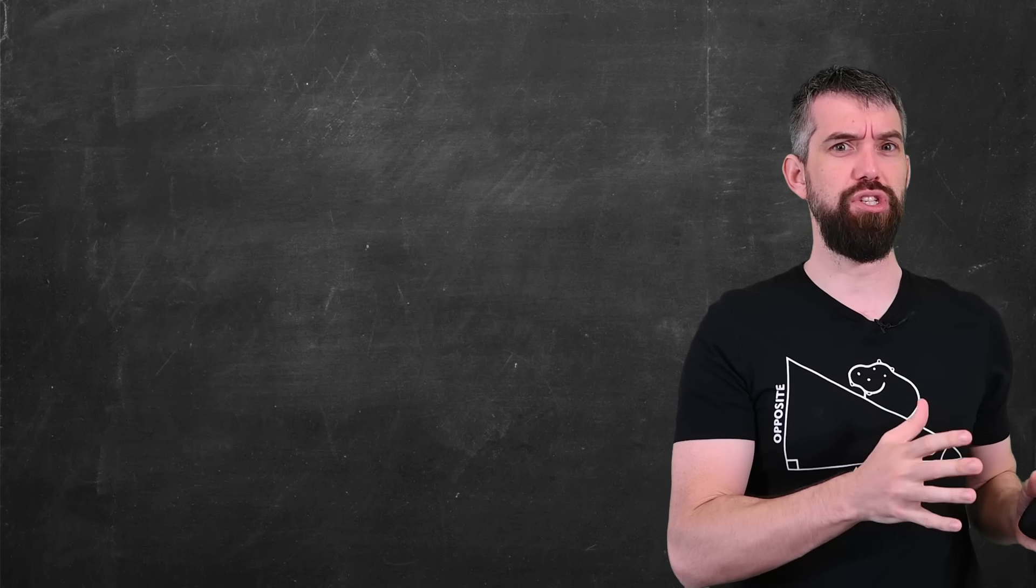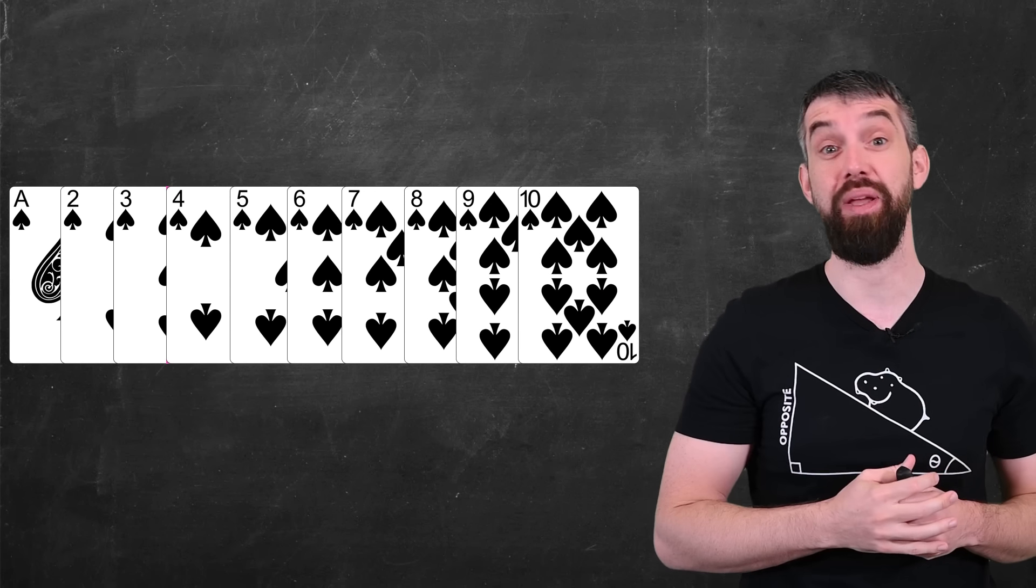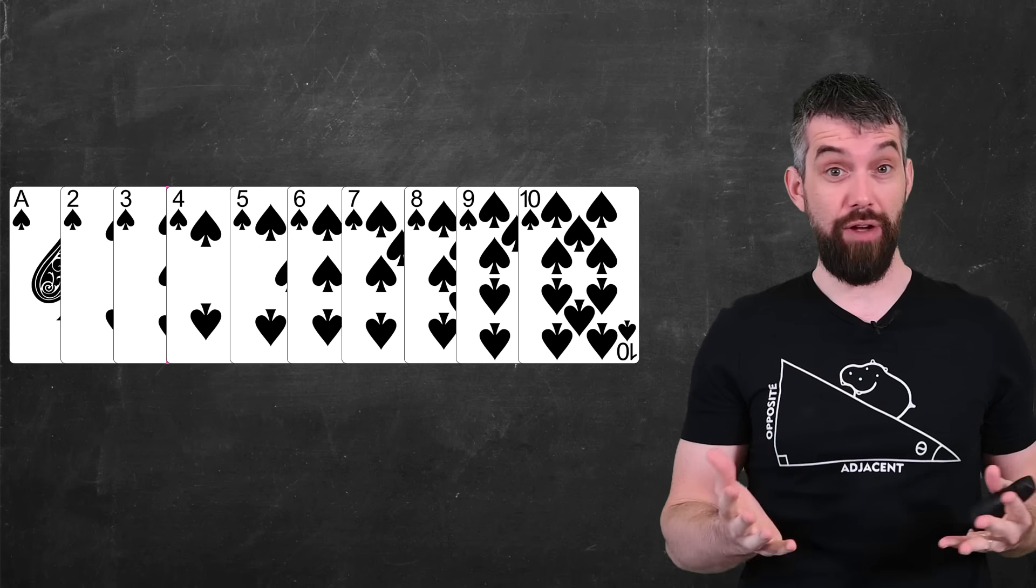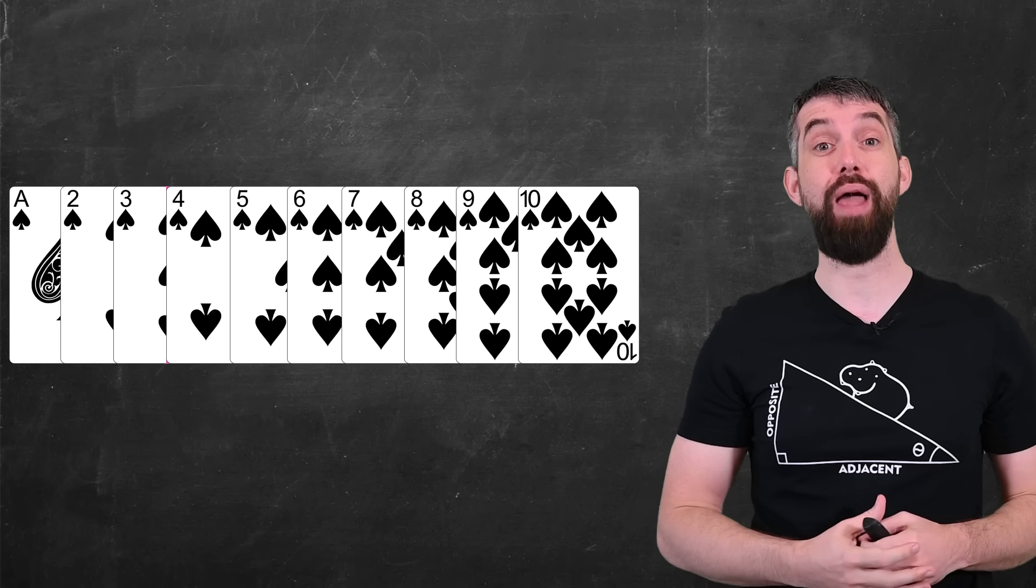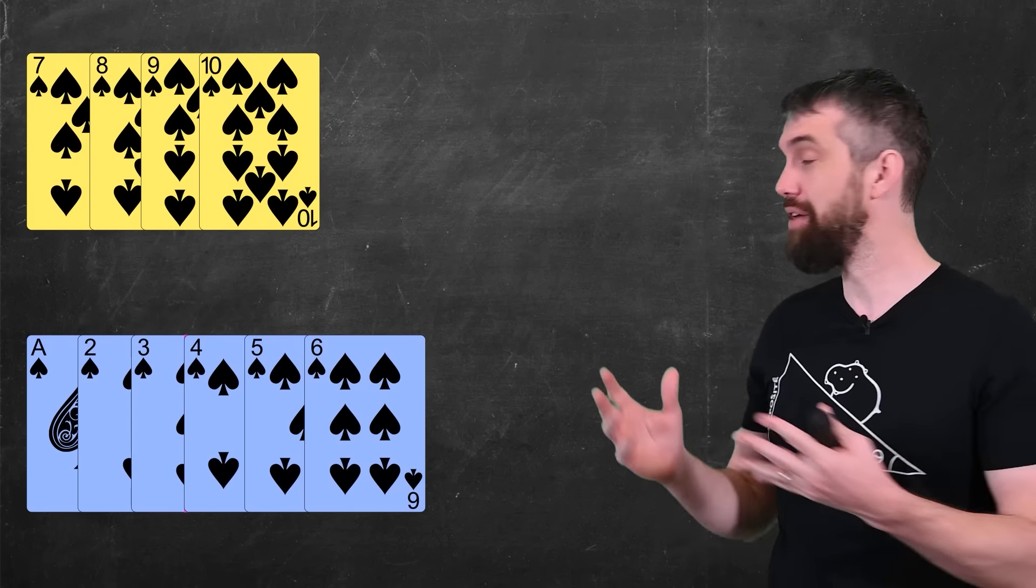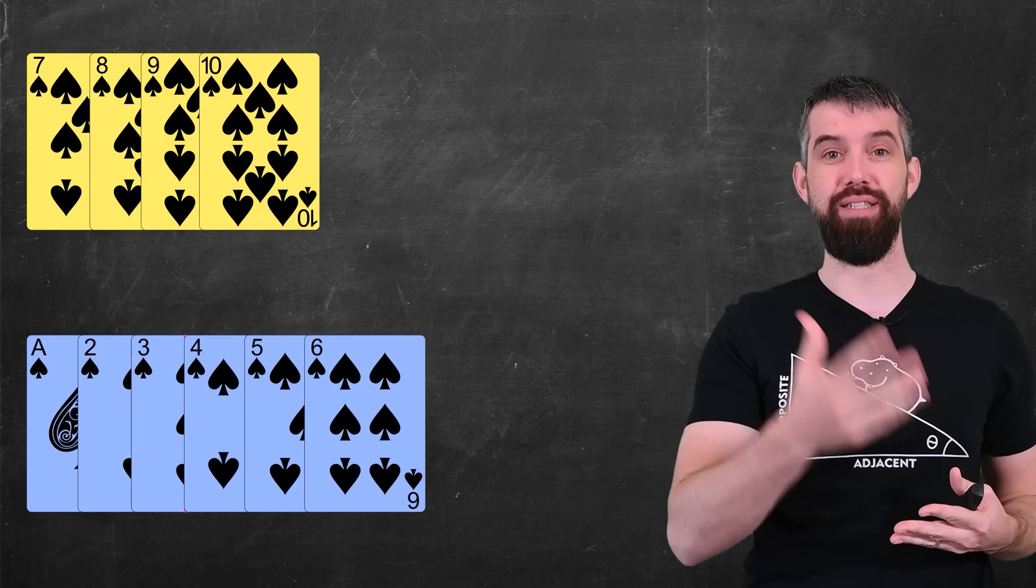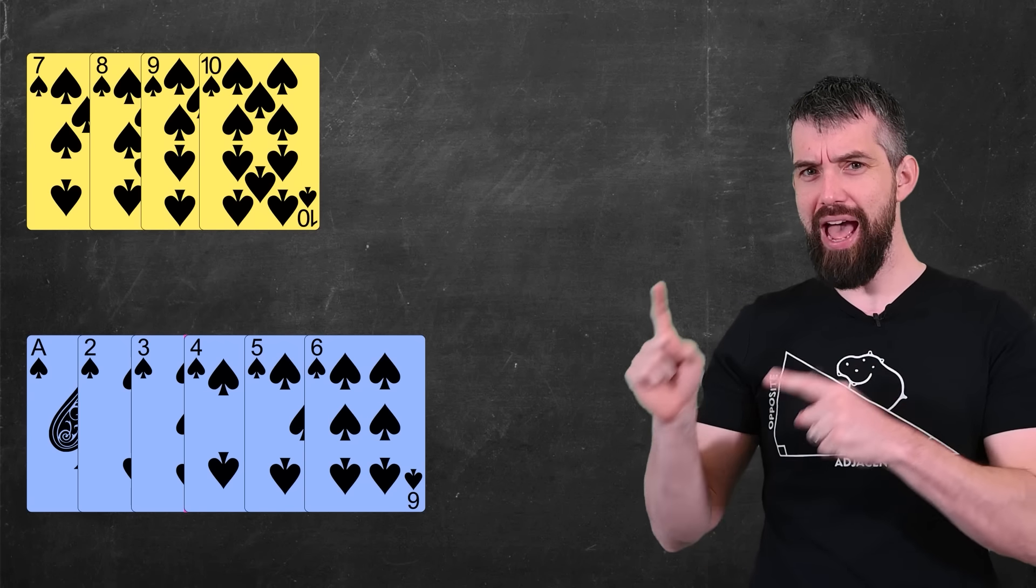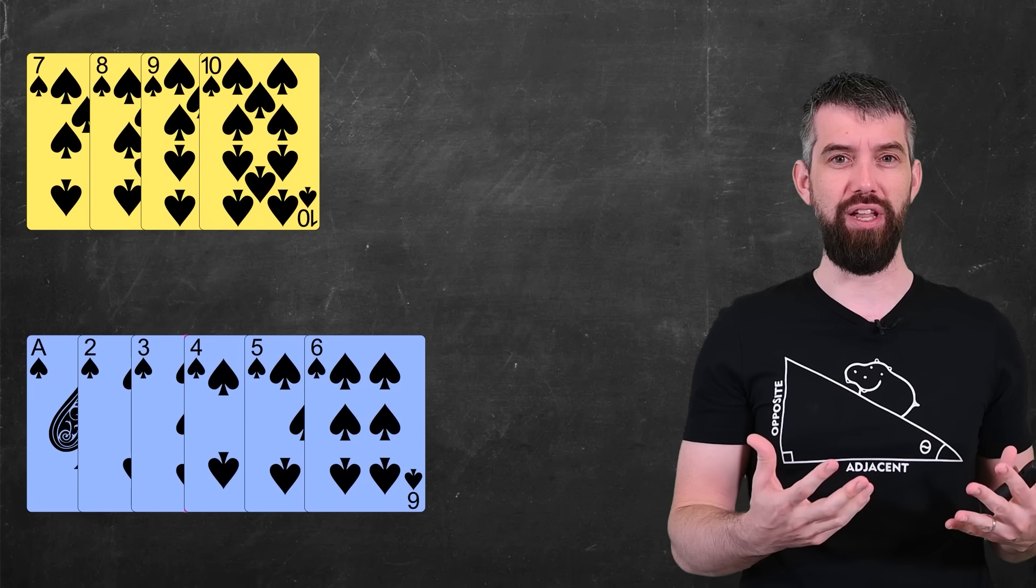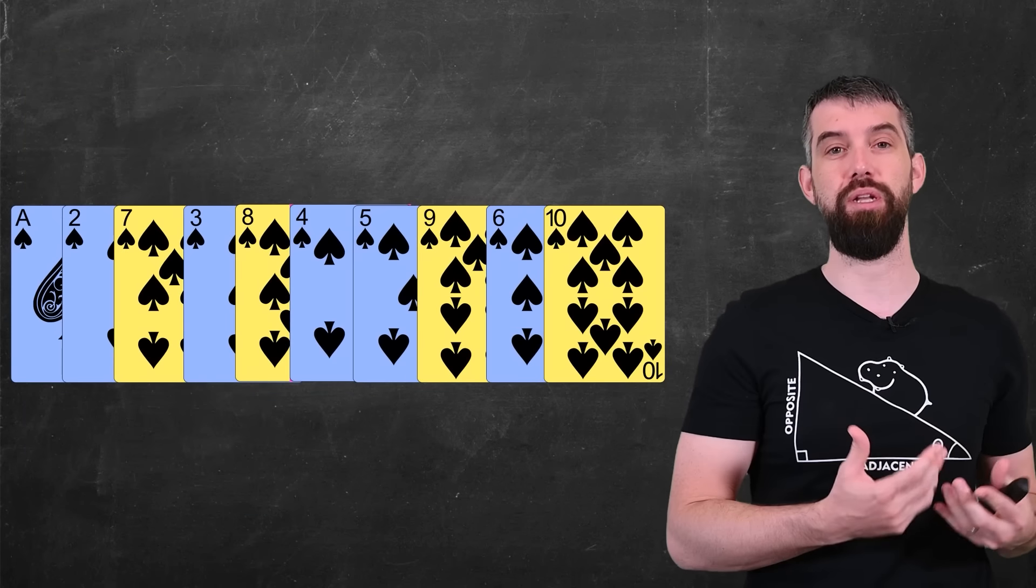Let's understand what shuffles do to just 10 cards to make it a little bit easier. I've put them here in ascending order. Now, a shuffle has two components to it. First of all, I'm going to have to cut it into two different piles. Here, I've done it a bit unevenly. I've got Ace through 6 and then 7 through 10. Then after I cut it, I have to interleave them together via the shuffling. And I get something that looks a little bit like this.